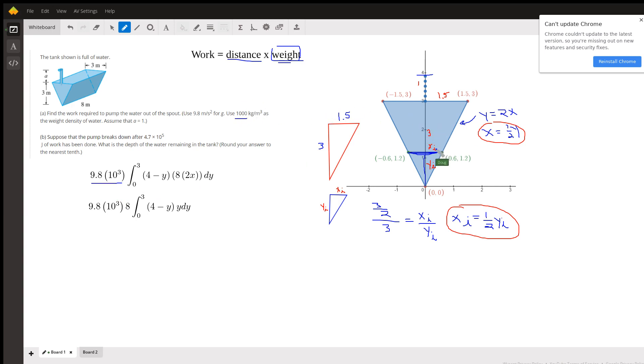So how do we find the relationship between x and y? Well, there's two ways to do it. You can think of similar right triangles. So when the water level is here, we've got this little right triangle. And of course, the big right triangle is the 1.5 and 3 for the legs. So we can set up this ratio, solve for x sub i, and we find out that x sub i is 1 half of y sub i always for any water level from 0 up to 3.